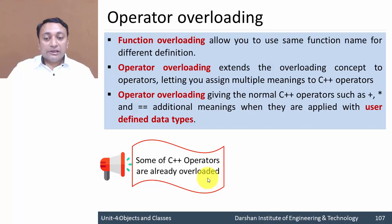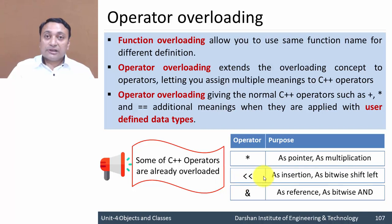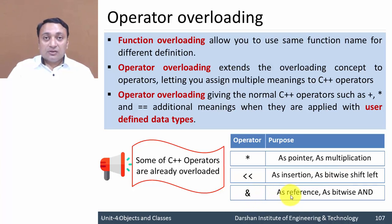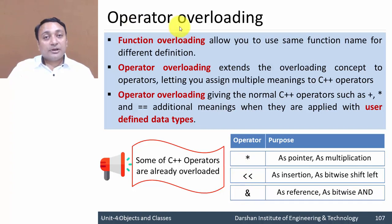Some operators are already overloaded in C++. The asterisk symbol can be used as a pointer to access the value at an address, or it can be used as multiplication. Same way, the left-shift operator can be used as an insertion operator with the cout object, or as a bitwise shift left. We also have the ampersand operator — it can be used as a reference variable, to pass by reference, or as a bitwise AND. When you provide two operands it performs bitwise AND; if you provide one operand it treats it as a reference variable. This multipurpose behavior is predefined in the compiler. If we want to add more meaning to any operator, we use the operator overloading concept.